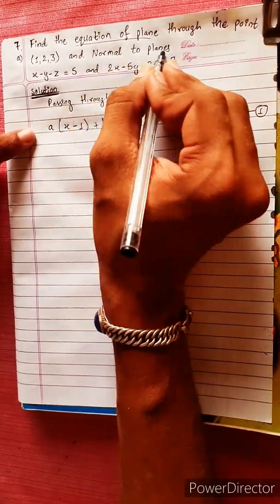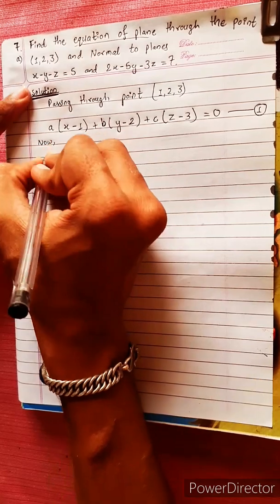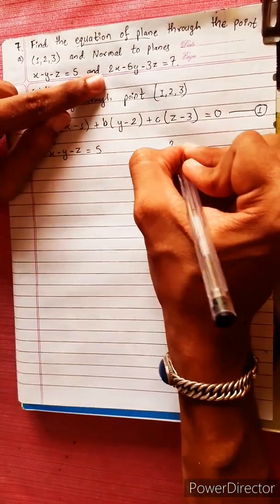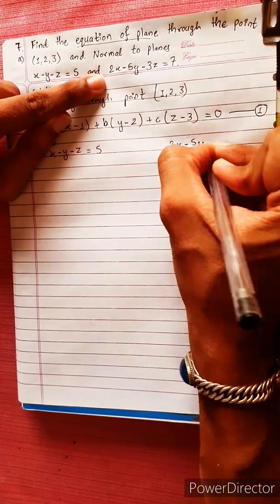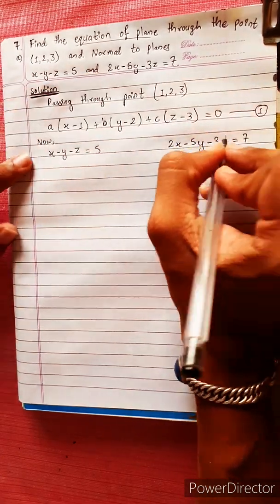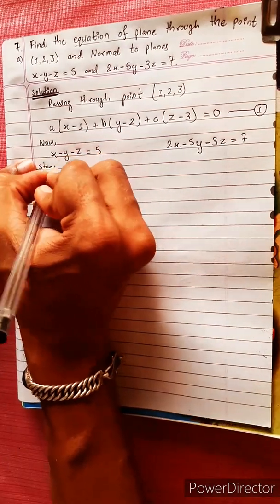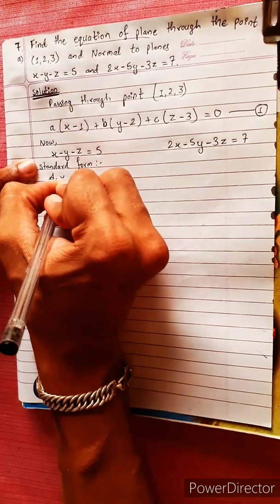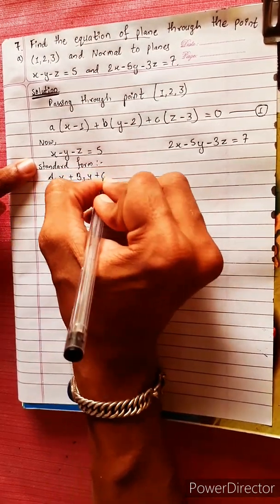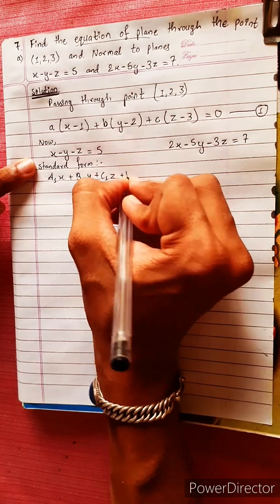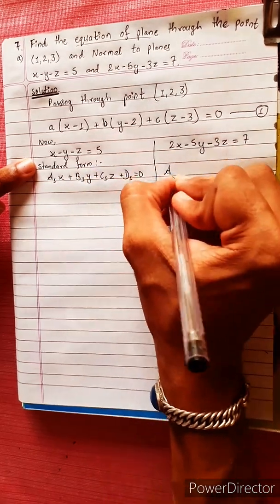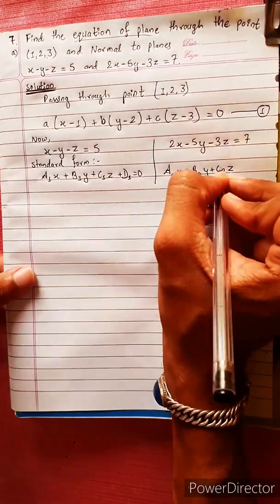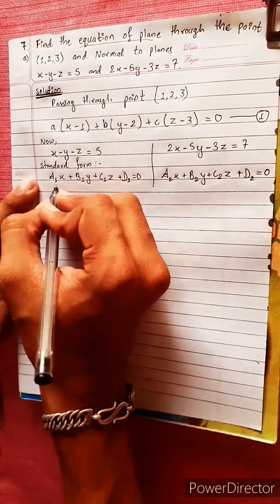This plane is normal to two planes: x - y - z = 5, and 2x - 5y - 3z = 7. We compare these to the standard forms a₁x + b₁y + c₁z + d₁ = 0 and a₂x + b₂y + c₂z + d₂ = 0.